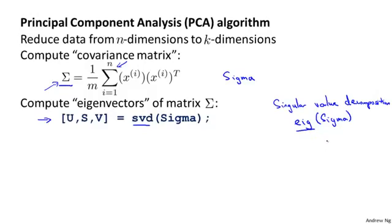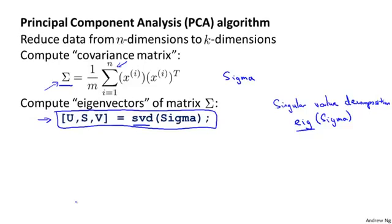All you need to know is that this is the command to implement in Octave. If you're implementing this in a different language than Octave or MATLAB, find the numerical linear algebra library that can compute the SVD or singular value decomposition — there are many such libraries for probably all major programming languages. You should be able to use that to find a routine to compute the matrices U, S, and V given the covariance matrix sigma.